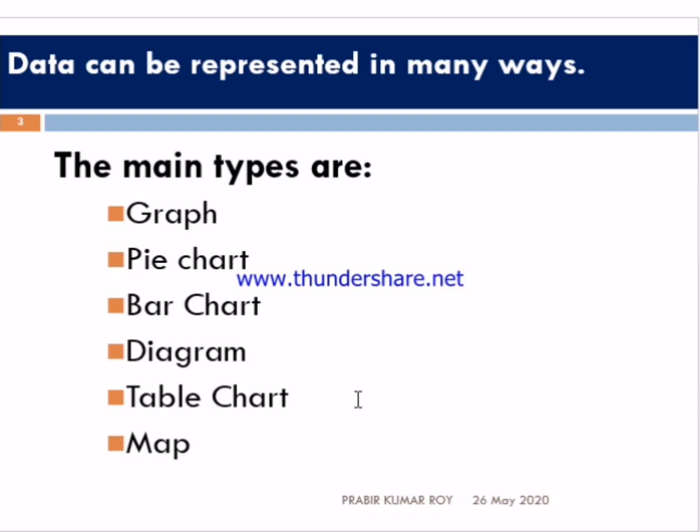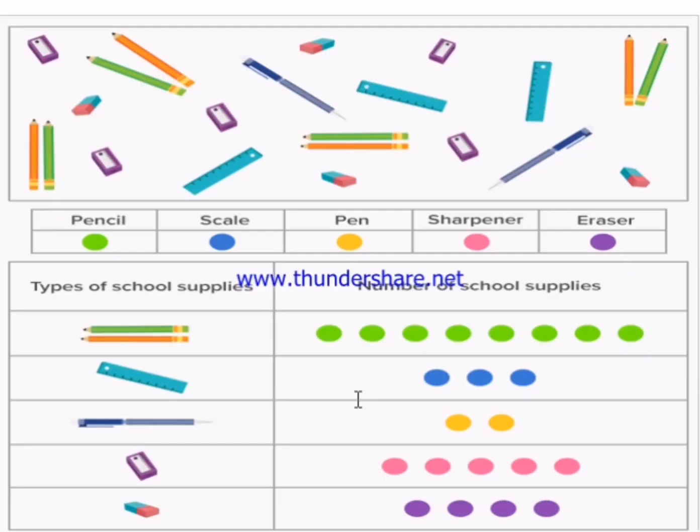Data is the heart of graph, pie chart, diagram, table chart, and map. In the question, a set of data are provided through graph, chart, or maps, and you have to describe them in your own language. So there is nothing to worry about. Stay with me for the next ten minutes and build your confidence.